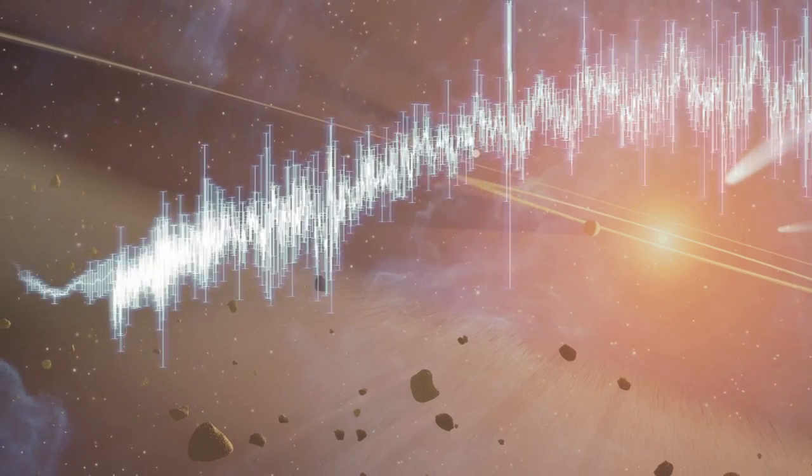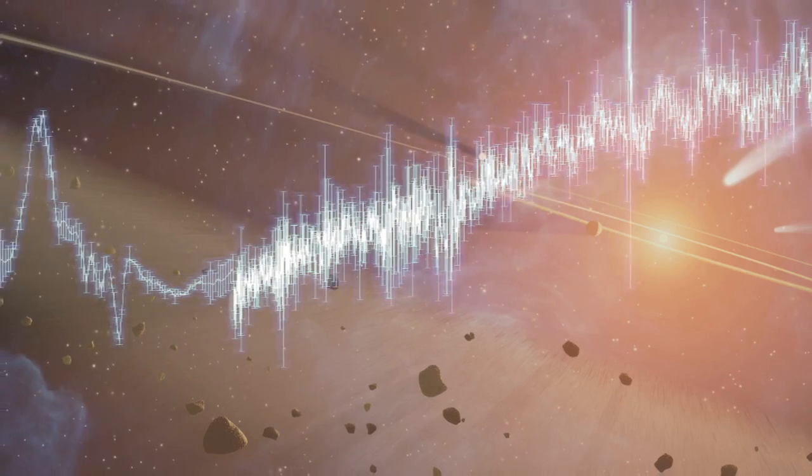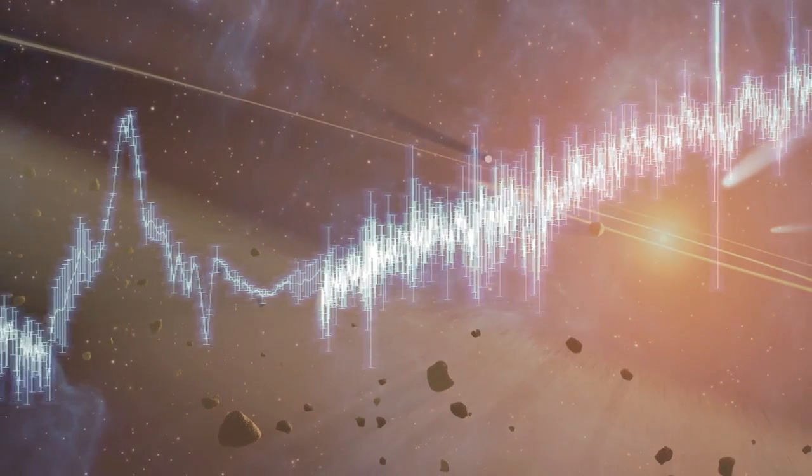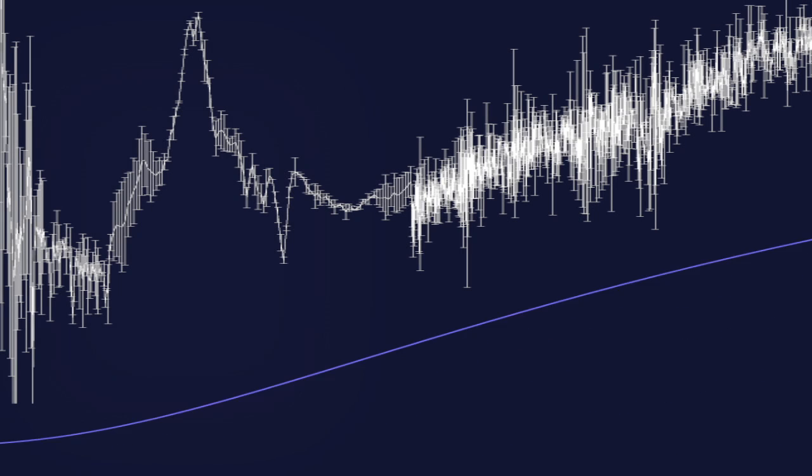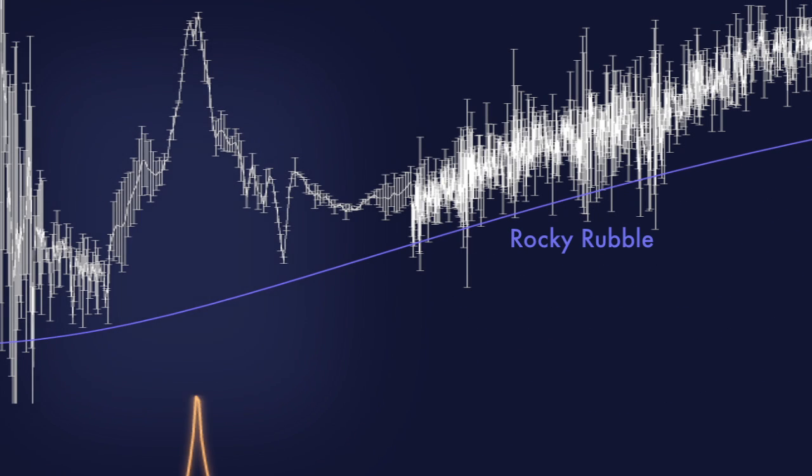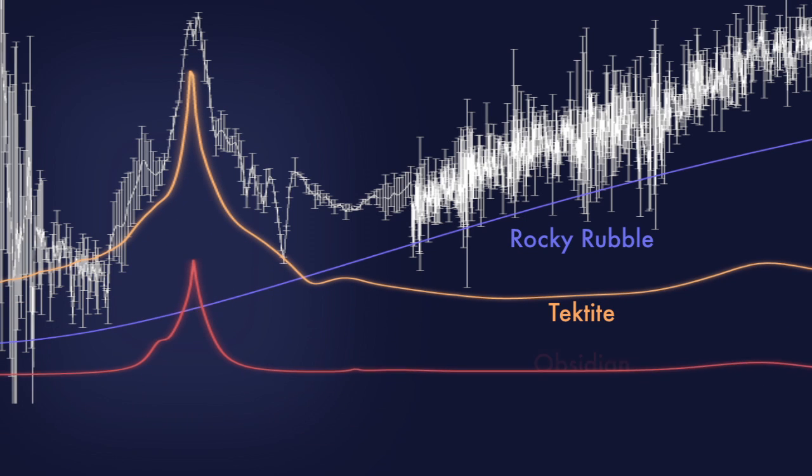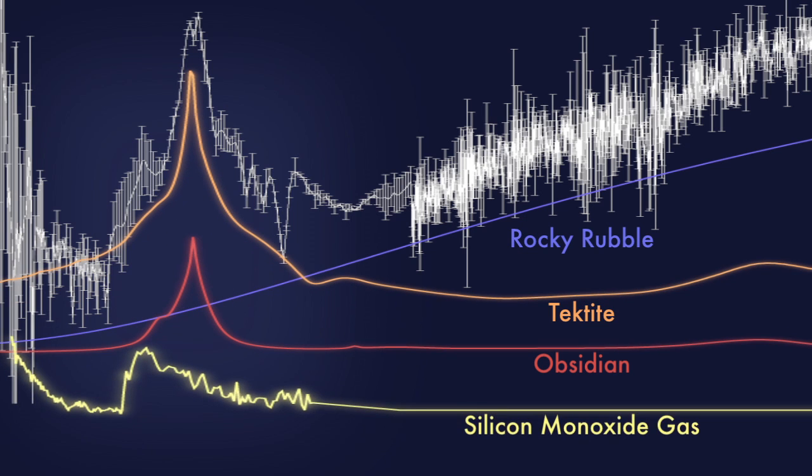Studying its spectrum, Dr. Liss and his colleagues realized they had found something very peculiar that they had not seen around other stars. Aside from the usual indicators of rocky rubble, they found features corresponding to tektite, obsidian, and silicon monoxide gas.